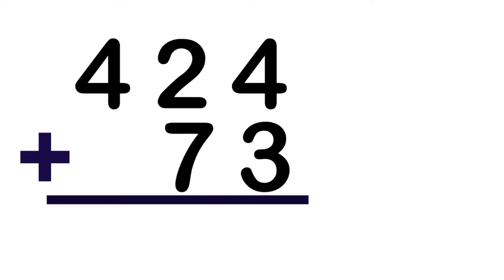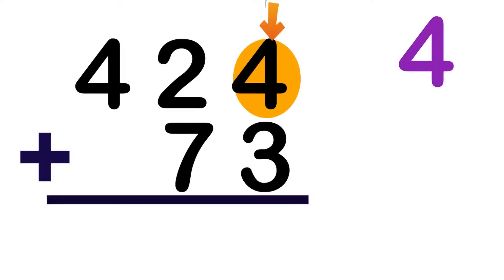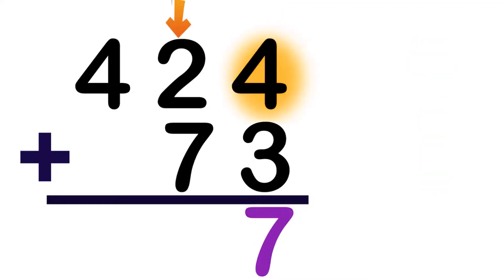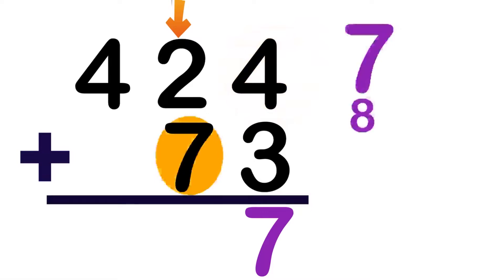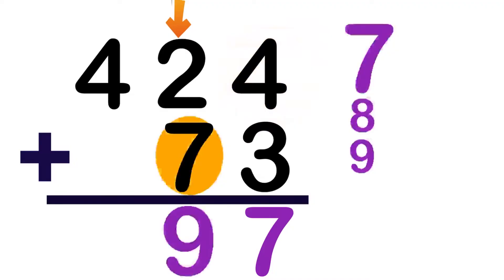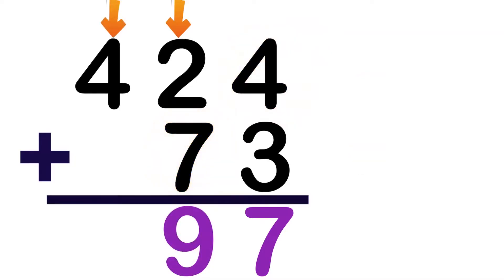Let's have another example: 424 plus 73. Again, we are going to start from the 1's place. 4 plus 3 is equal to 7. Let's proceed to the 10's place — 2 plus 7 is equal to 9. Let's proceed to the 100's place. Since we don't have a digit at the bottom of digit 4, we will bring down digit 4, because 4 plus 0 is equal to 4. So, the sum of 424 and 73 is 497.